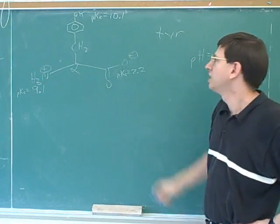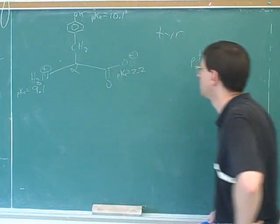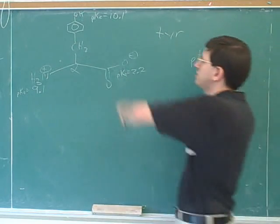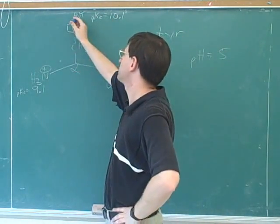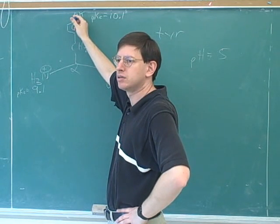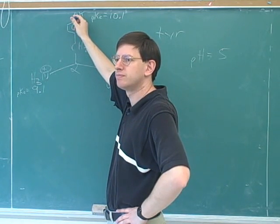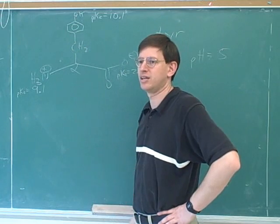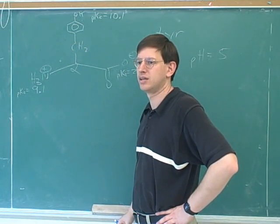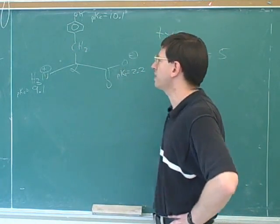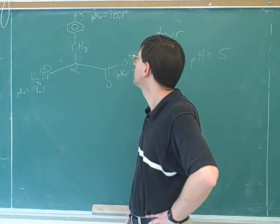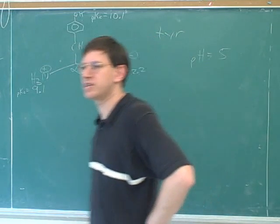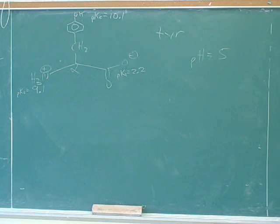The carboxy group is deprotonated, giving a negative charge. The amino group is protonated, giving a positive charge. Now what's going to happen with the side chain? It's going to remain protonated — pH 5 is low relative to the side chain pKa. Did we expect this to be an acidic or a basic side chain? How can we tell? We check whether there's a little c in the column.